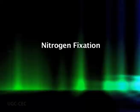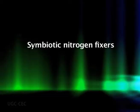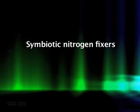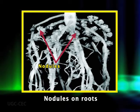Let's now discuss nitrogen fixation. There are specific organisms called symbiotic nitrogen fixers in association with plants. The plant is identified as the host and the microbial partner is known as the microsymbiont. The most common form of symbiotic association results in the formation of enlarged, multicellular structures called nodules on the roots, or occasionally on the stem of the host plant.